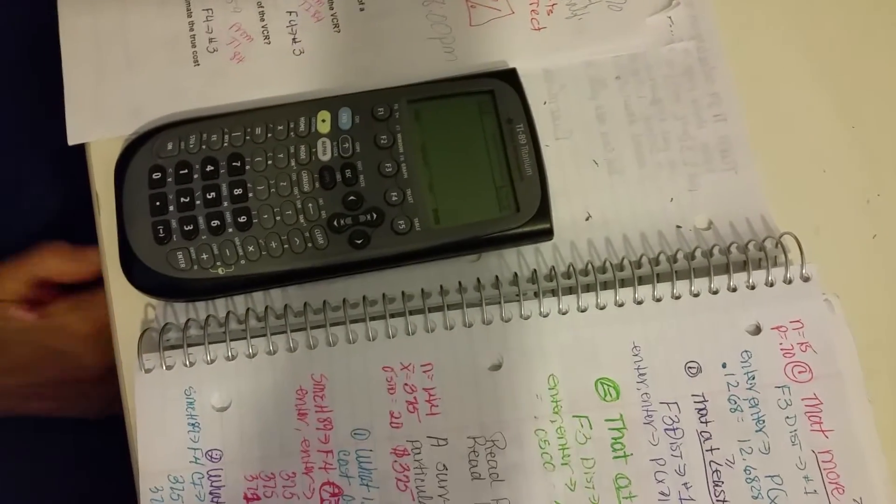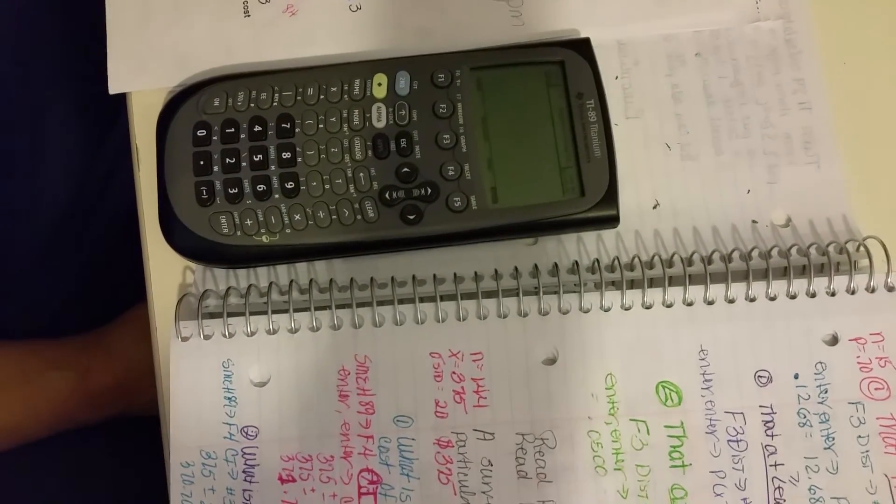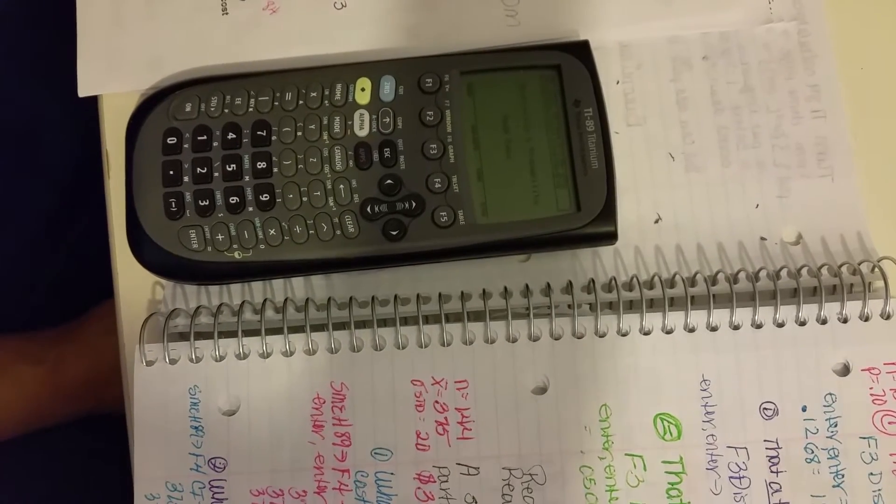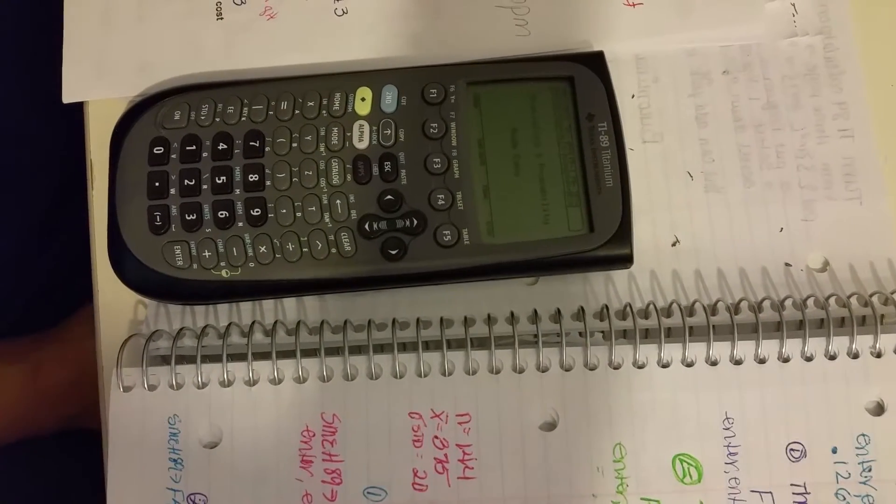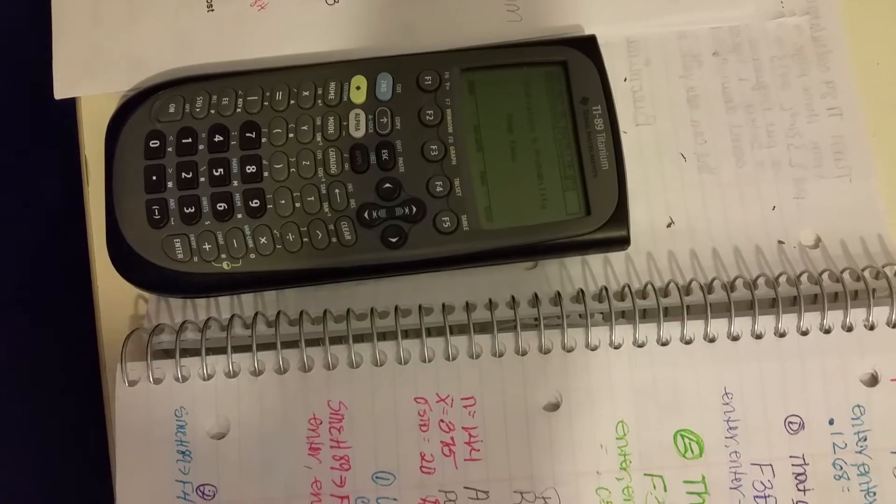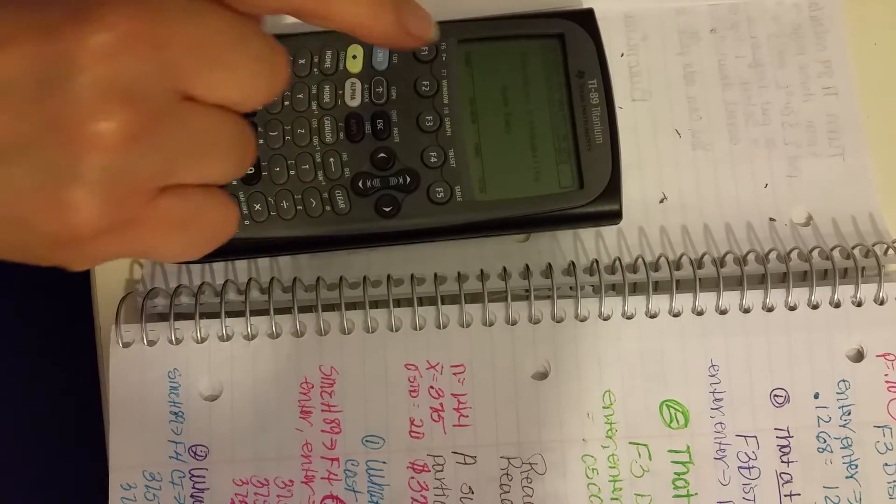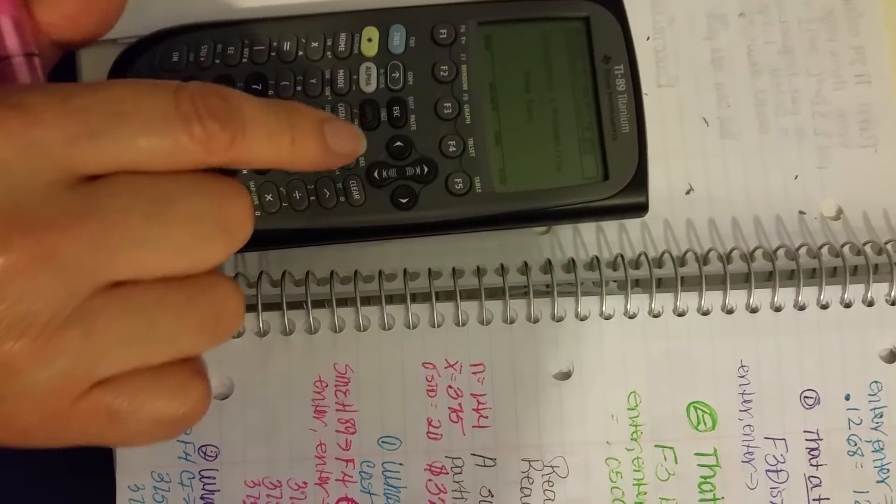Enter. And we're going to wait for it to think about it until it pops up. And the confidence interval function is F4. As you can see, it says CI. That's for confidence interval.